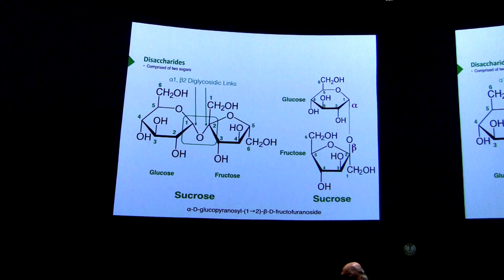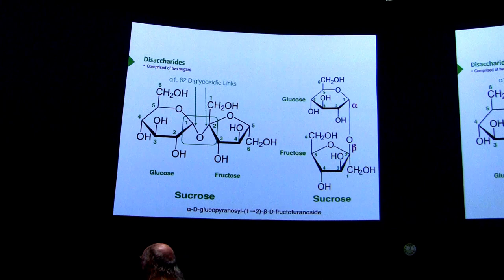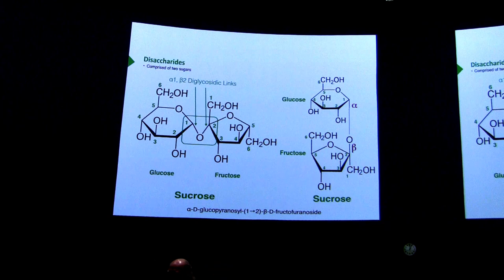Don't use that dumb structure on the left. I really don't understand why every textbook on earth except mine does that, because it confuses students — it's backwards to the way you learn the numbering. The chemical name of this sugar is shown at the bottom: alpha-D-glucopyranosal, one to two — so the glucose is in the pyranose form and linked via position one — and beta-D-fructofuranosal. I don't care that you memorize that last name, but you can see where the name comes from given the structures.